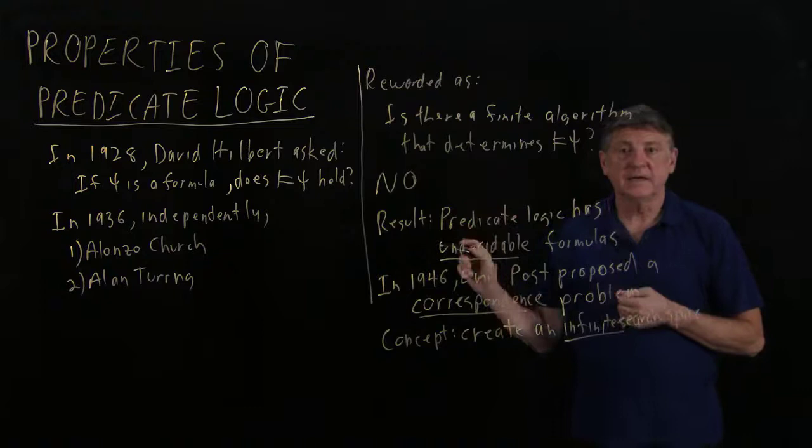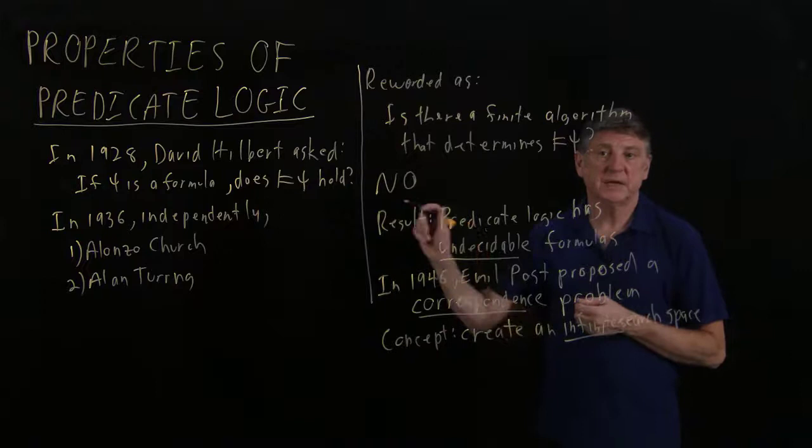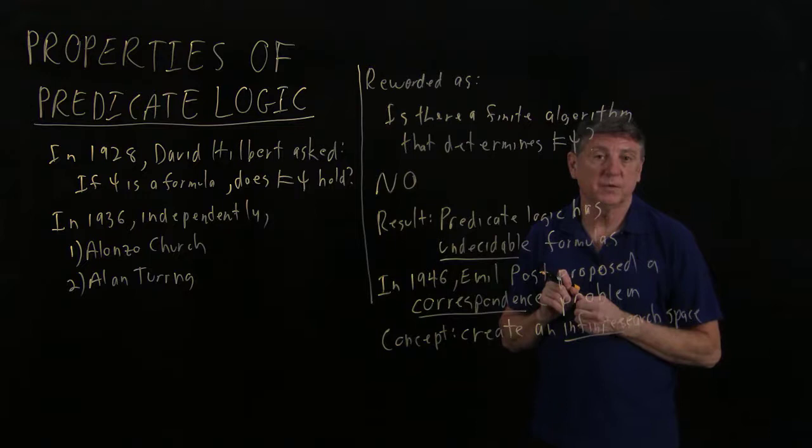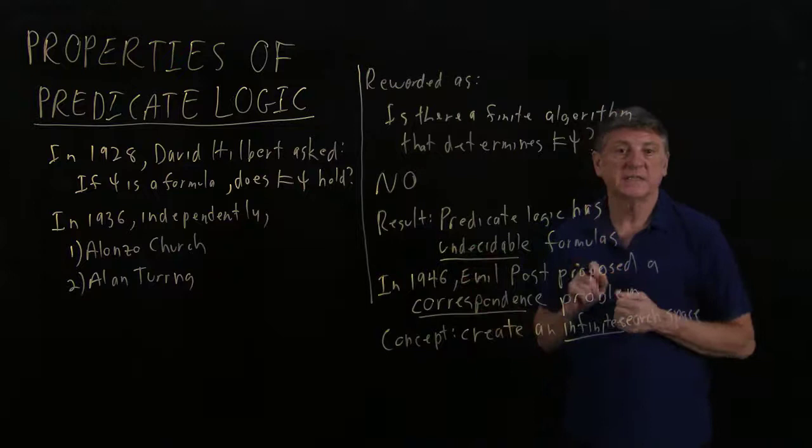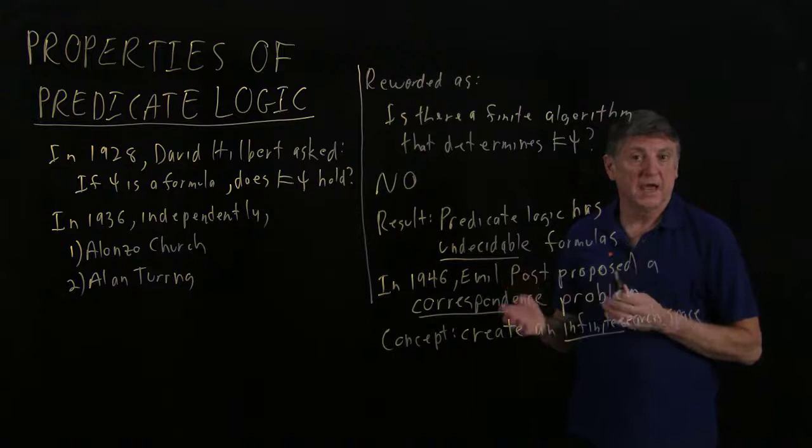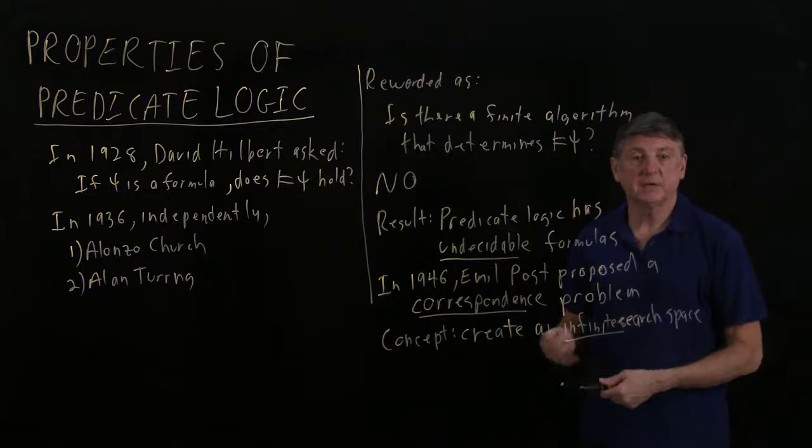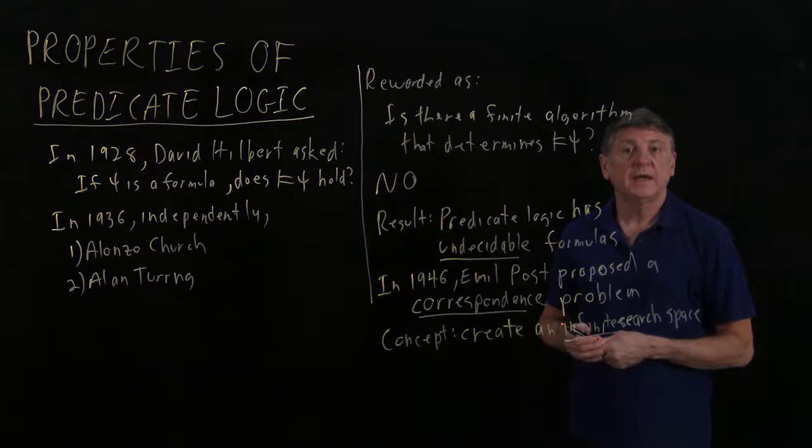So, in 1936, Church and Turing used highly technical arguments that demonstrated that Hilbert's thesis was false. That is, there is no algorithm for determining whether a formula can be proved or not in predicate logic. And in 1946, Post came up with an elegant example that could be infinitely extended, and referred to this as the correspondence problem, and showed that what this did was, it created an infinite size search space that had to be checked.